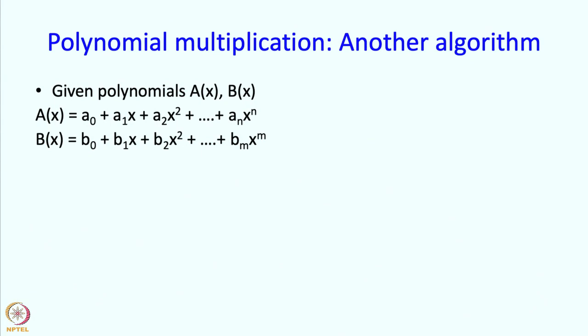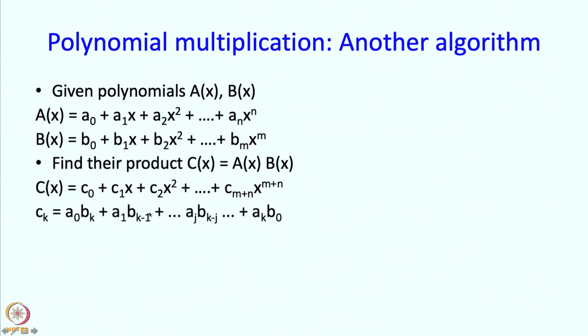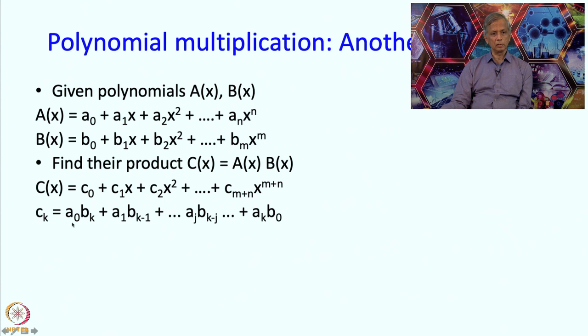Now I am going to just describe another polynomial multiplication algorithm. And this algorithm uses sort of an interesting manipulation of the indices. So the problem is really the same, we are given polynomials, we want to find the product. And this time I am going to note explicitly what Ck is going to equal. So Ck is going to get the product, the value of A0 Bk will contribute to Ck. Then A1 Bk-1 will also contribute to Ck and so on until Ak B0. So now what we are going to do is we are going to compute C0 first, then C1, then C2, all the way till Cm plus n.